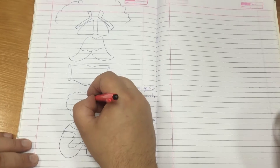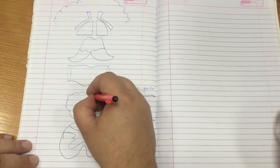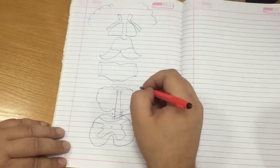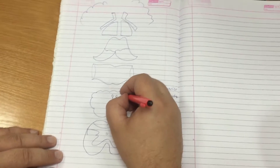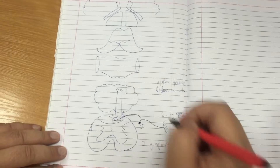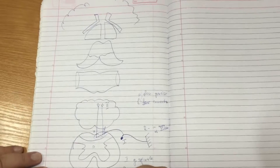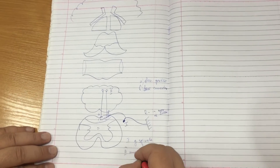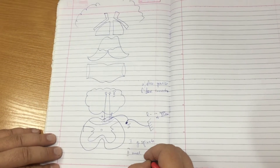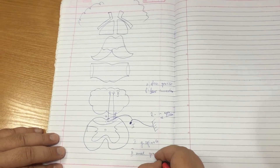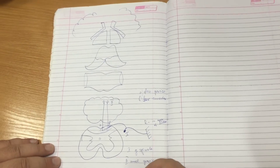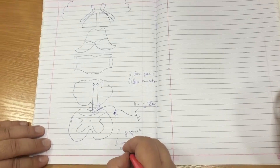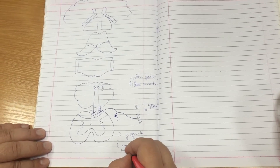Now go to the second neuron. The second neuron is in the medulla oblongata. The name of this nucleus number two is Nucleus gracilis and Nucleus cuneatus.